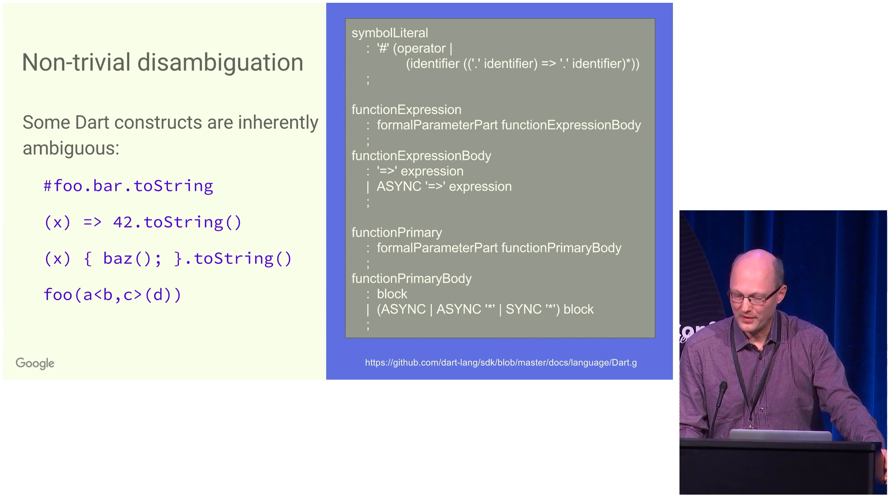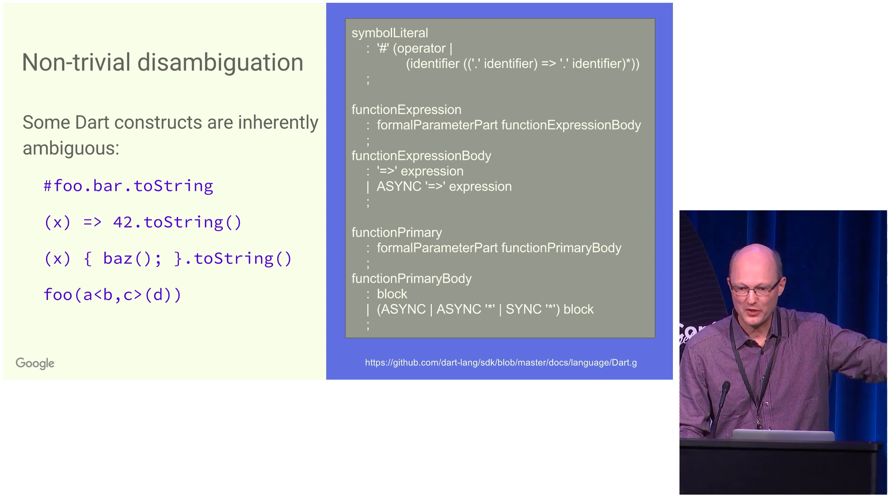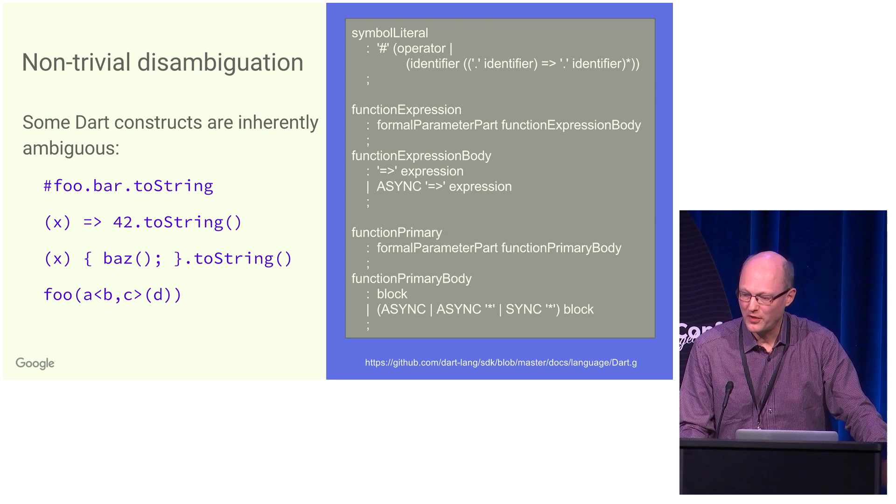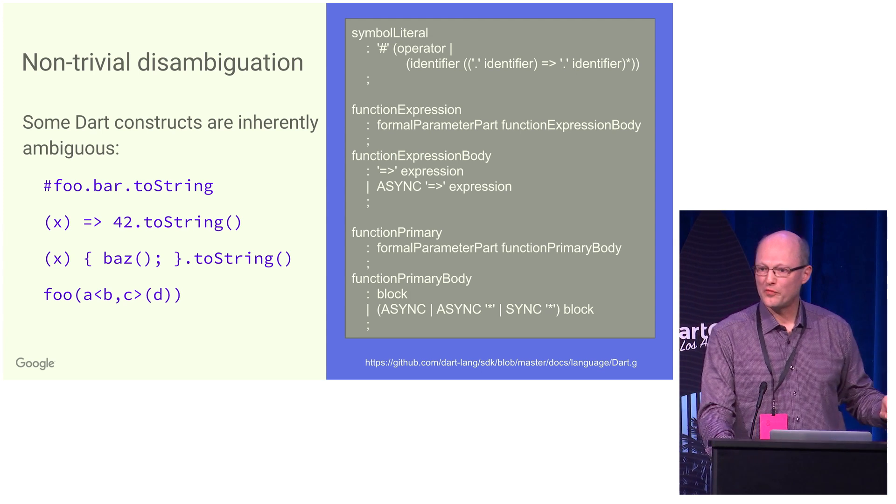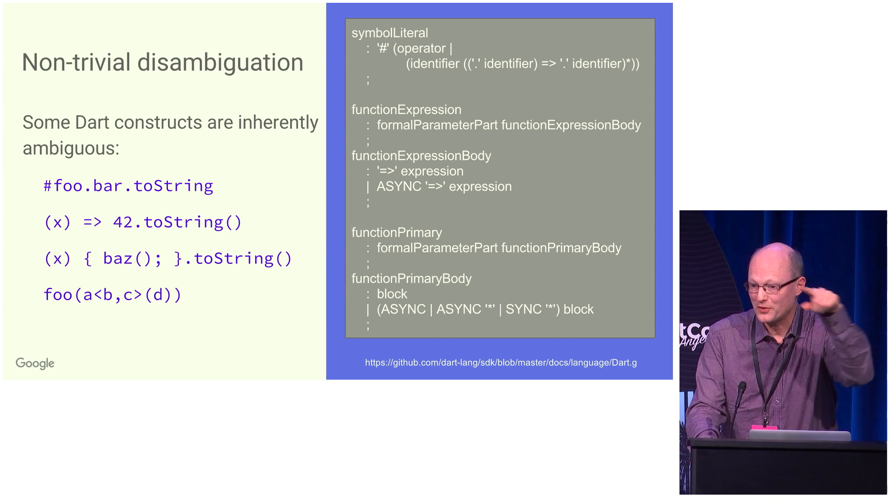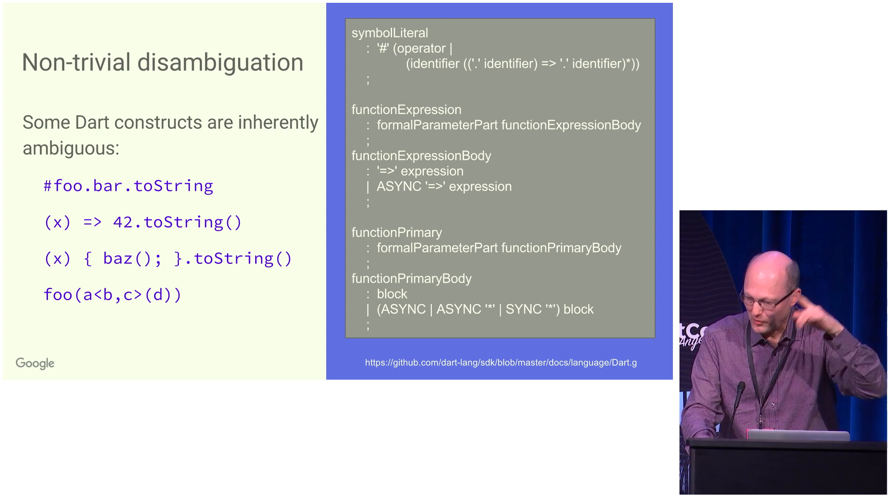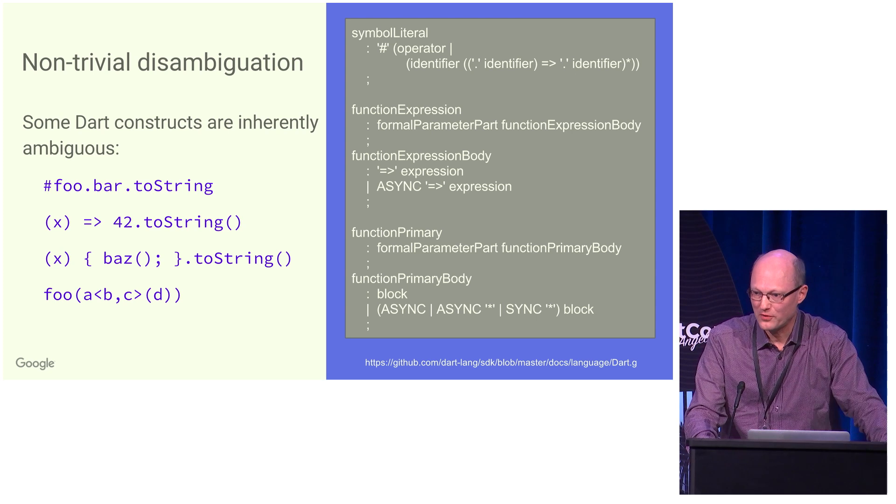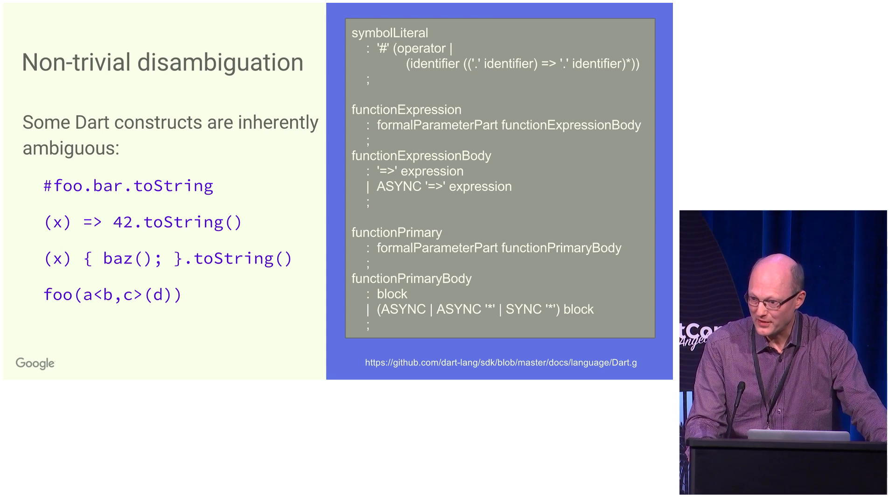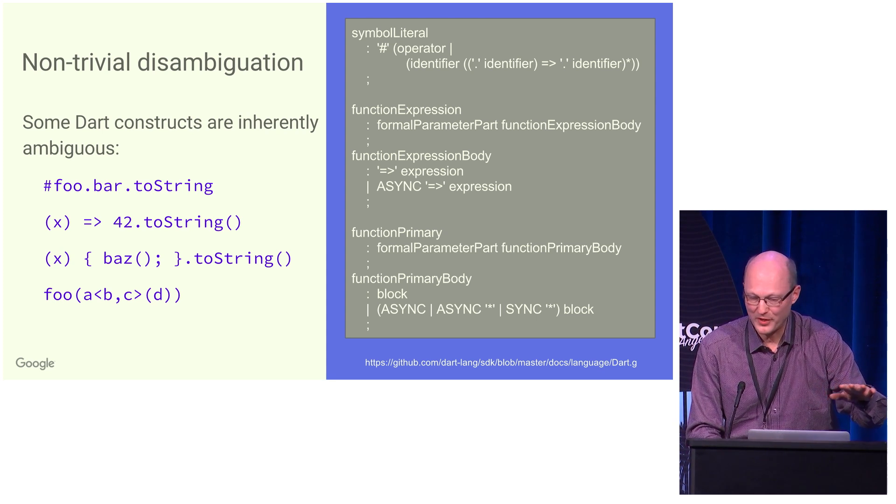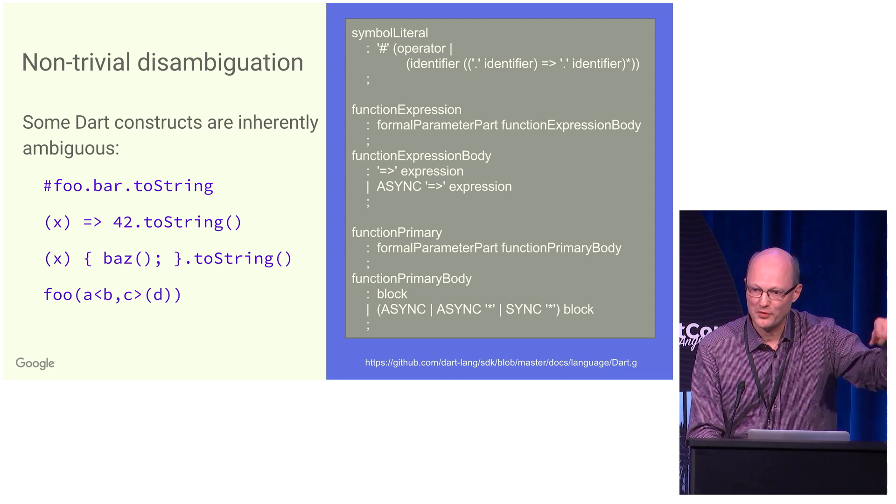We have a number of cases where we need to disambiguate, and this happens in different ways in the specification. The symbol literal at the top is one good example. If you have something like foo.bar.toString, that could be a symbol that has three elements. But it could also be a symbol that's foo.bar, and then you run the toString tear-off process on that to get something that will actually return the string that represents that symbol. There is no syntactic way to say that because the grammar is simply ambiguous.